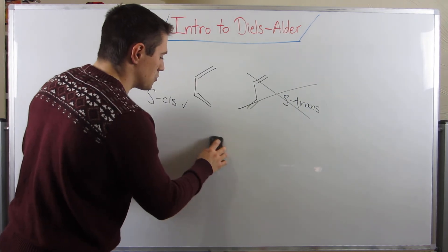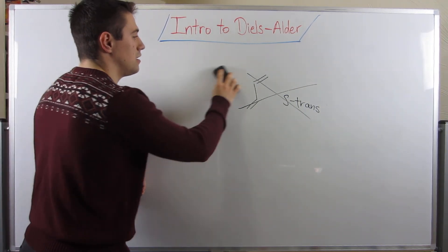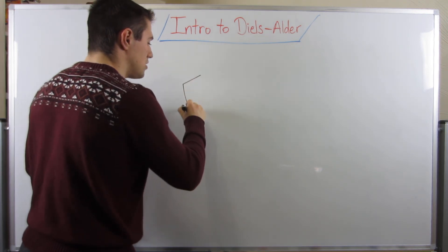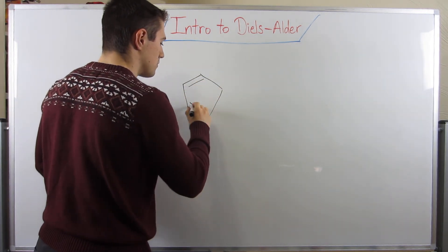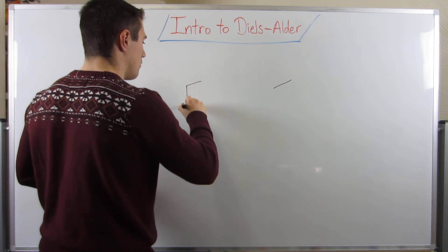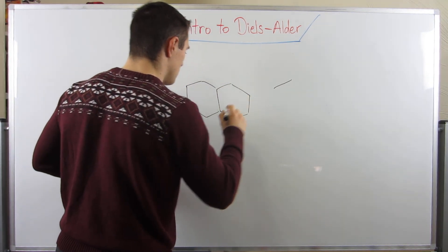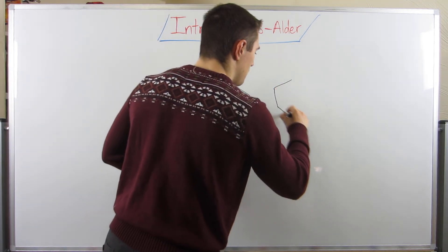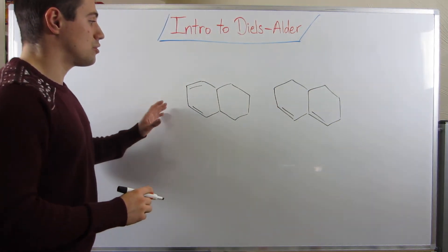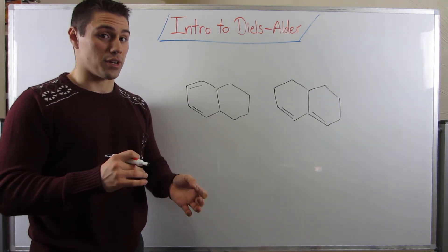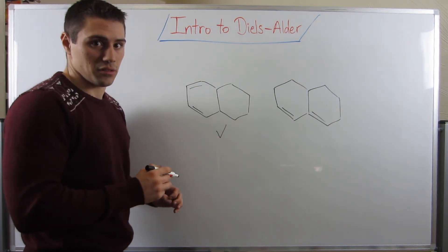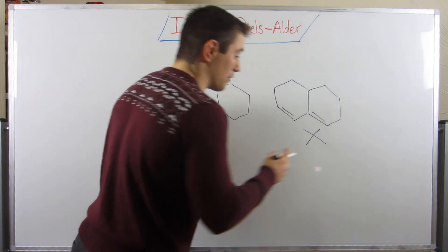For food for thought - it's on the worksheet but here's a little hint: what happens if I drew you these two dienes? Carefully look at where the double bonds are and think about which is S-cis and which is S-trans. This structure always does a Diels-Alder reaction; this structure never does a Diels-Alder reaction.